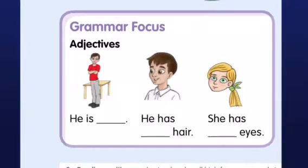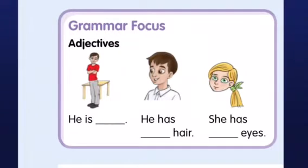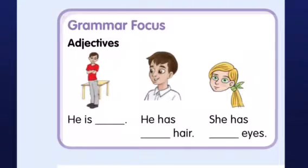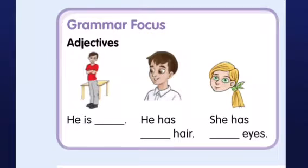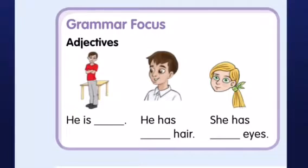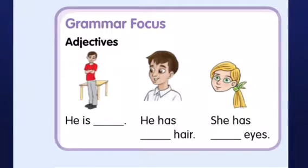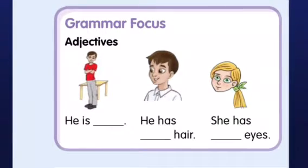We're going to talk about adjectives. What are adjectives? Adjectives are words that describe nouns. For example, he is tall, short, thin, fat. Also colors like white, black, blue. So adjectives are words that describe nouns.